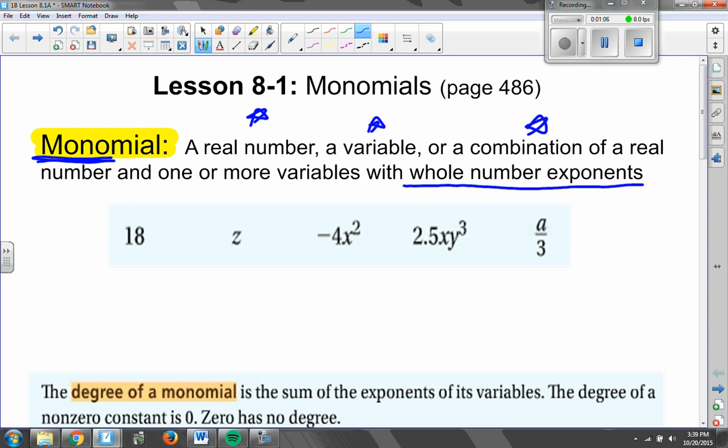It could be any of these three things, a real number, some combination of variables, like we see here with our x and y together, or it can be a combination of numbers and variables. Please add that definition of monomial to your notes, and down below I've listed a bunch of examples of what a monomial is. A monomial could be a number, like 18. That is a monomial, just a number.